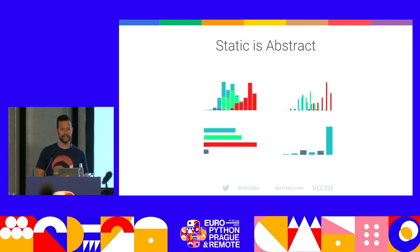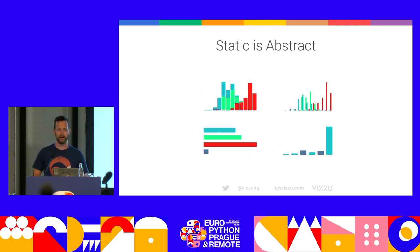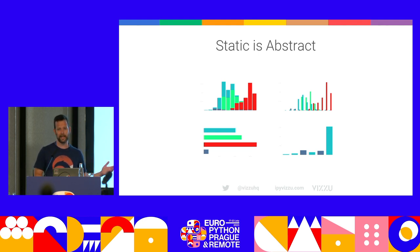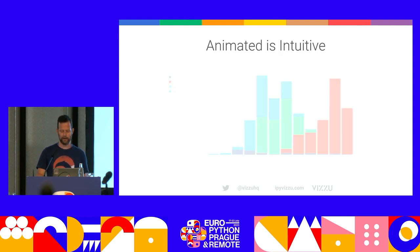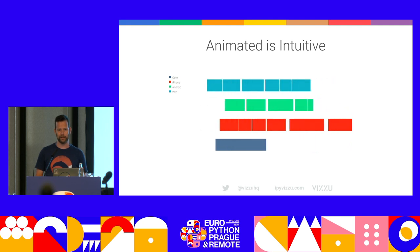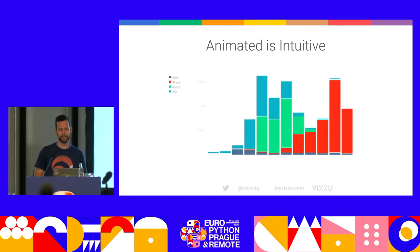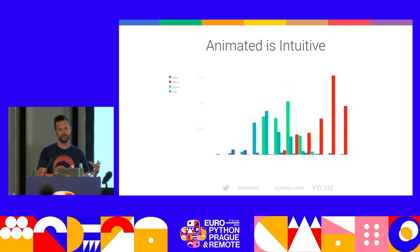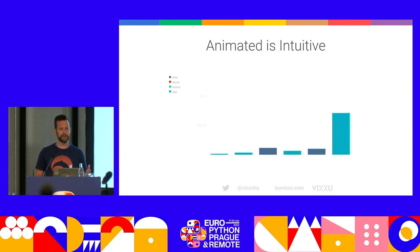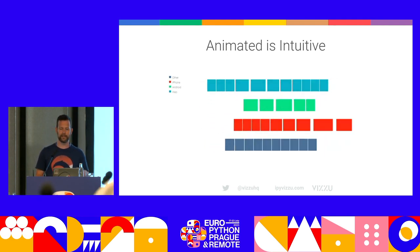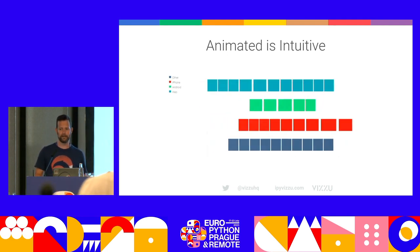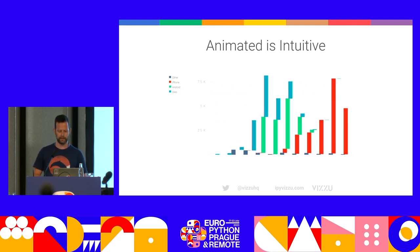Why do we think animation makes sense to use? Static charts, we think, are abstract in one sense. For example, these four charts show different views of the same dataset, but without your expertise or explanation, making the connection between them can be rather hard. Whereas if I connect these views with animation, it becomes very intuitive — no further explanation needed. Everybody understands how these views relate to one another. We're using different parts of our brain to decipher movement than the abstract decoding task of reading charts.